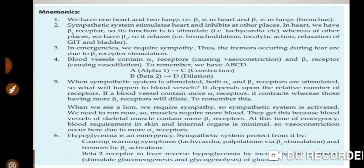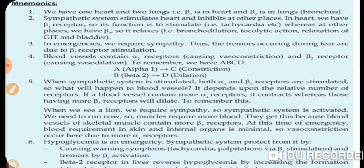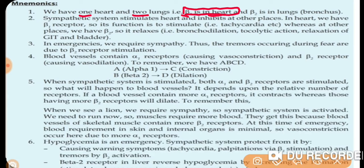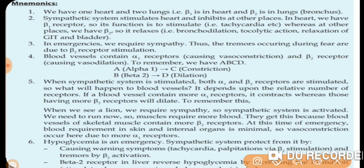To remember this, we have one heart and two lungs. Because we have one heart, beta-1 receptors are in the heart. Because we have two lungs, beta-2 receptors are in the lungs. So beta-1 is in the heart and beta-2 is in the lungs.